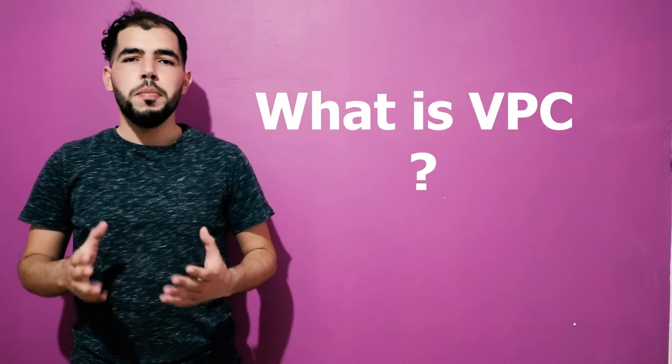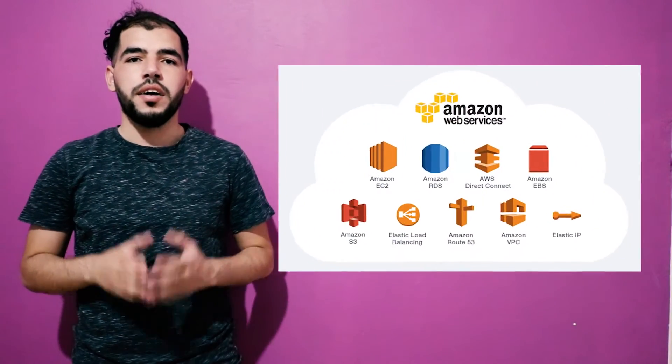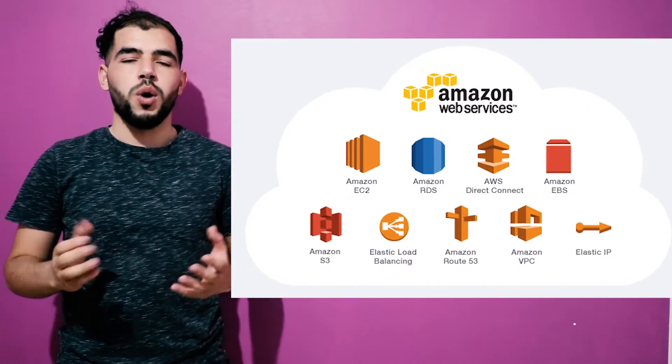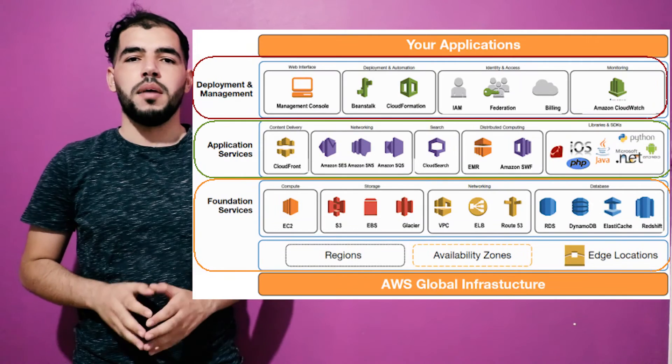So what's the VPC? The VPC, or the Virtual Private Cloud, enables you to launch AWS resources into a virtual network that you have defined. The VPC closely resembles a traditional network that you have operated in your own data center, with the benefits of using the scalable infrastructure of AWS.